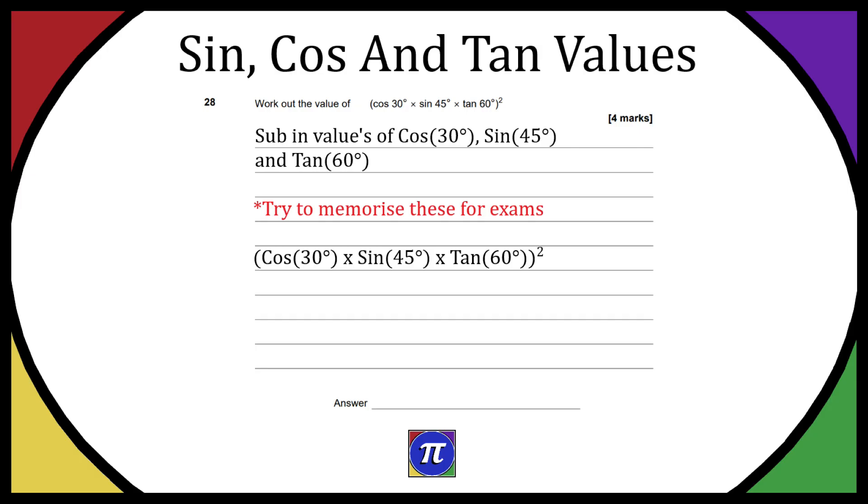So we take our multiplication here and then we sub in the values. Cos of 30 is the square root of 3 over 2, sine of 45 is the square root of 2 over 2, and then tan of 60 is the square root of 3.